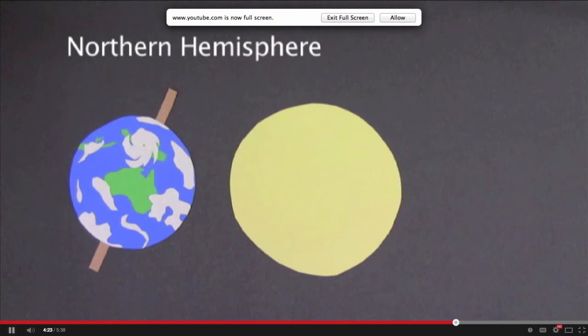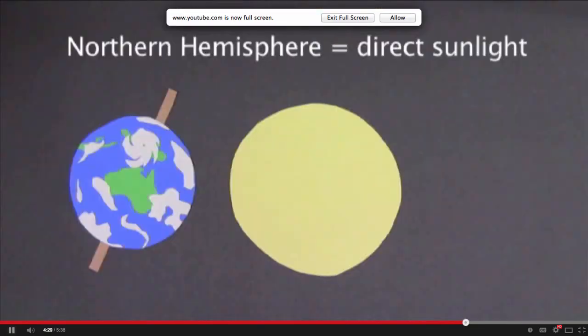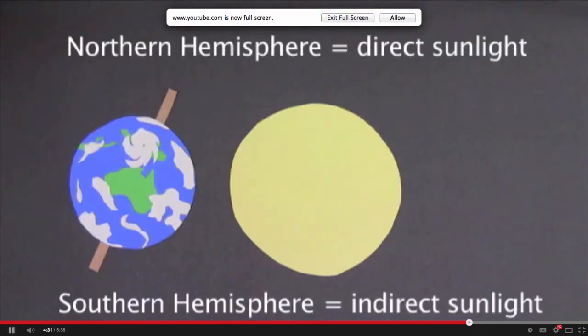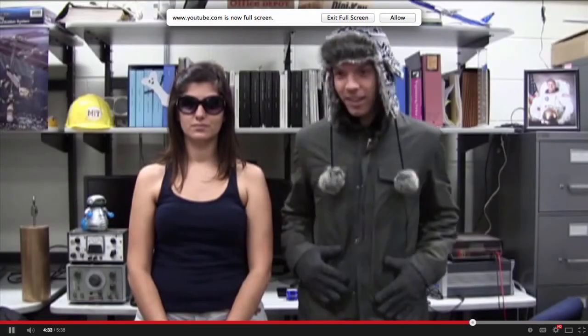When the northern hemisphere is tilted towards the sun, it's receiving direct sunlight. It feels warmer, which means it's summer there. And, the southern hemisphere is receiving indirect sunlight, which means it feels cooler. That's winter.